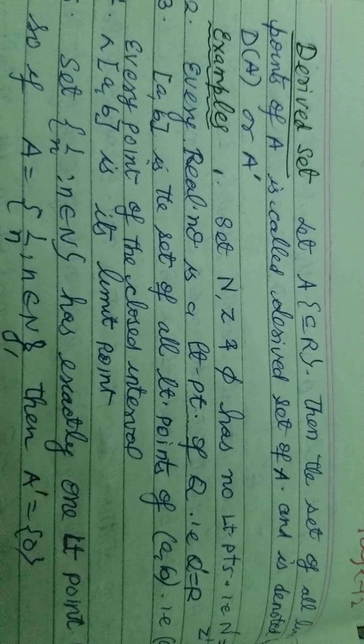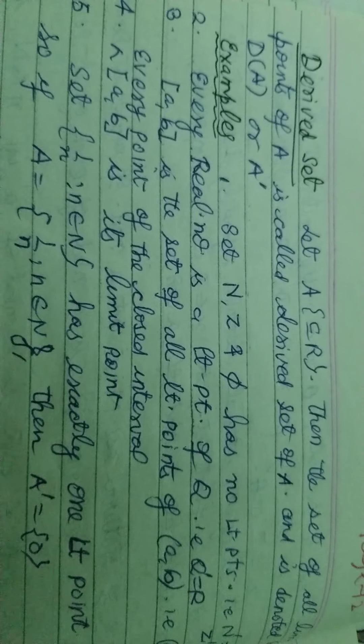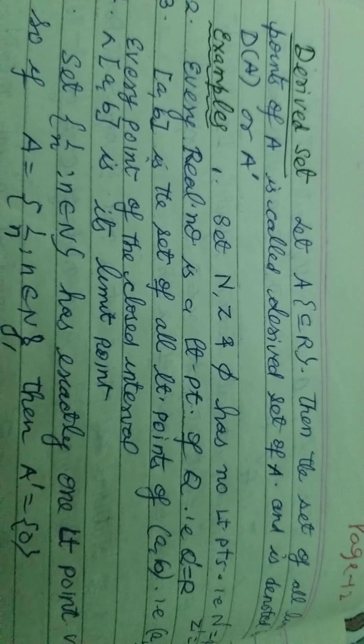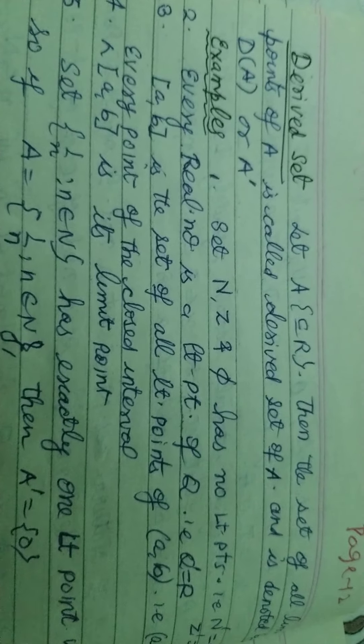Let A be a subset of R. Then the set of all limit points of A is called the derived set of A, and we denote it as A' (A-dash) or D of A.